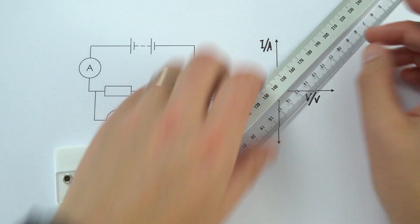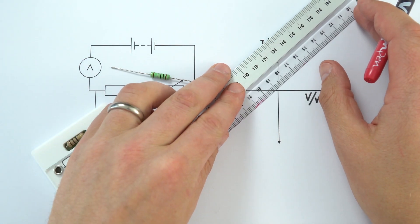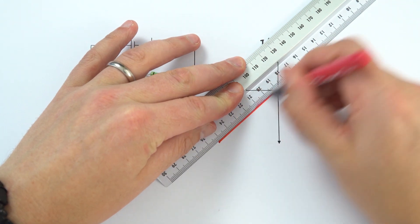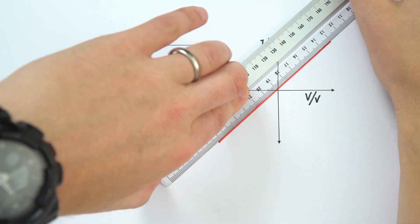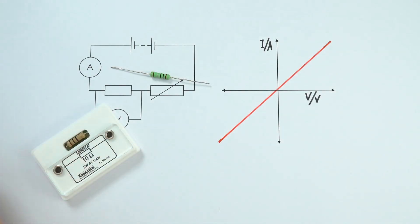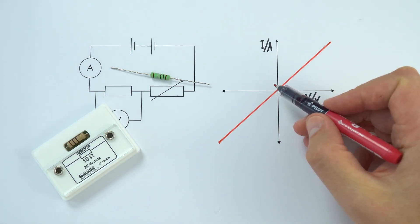If I draw that with a ruler - this is an experiment you'll probably carry out at some point in your GCSEs - you should get something that looks like that. So we've got a straight line that goes through the origin.